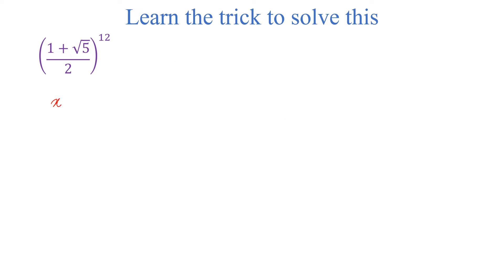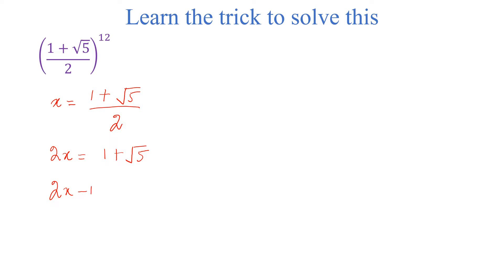Let x be equal to 1 plus square root of 5 divided by 2. We can write this as 2x is equal to 1 plus square root of 5 by multiplying both sides. Then we can write 2x minus 1 is equal to square root of 5, and taking the whole square on both sides, so (2x minus 1)² is equal to (√5)².